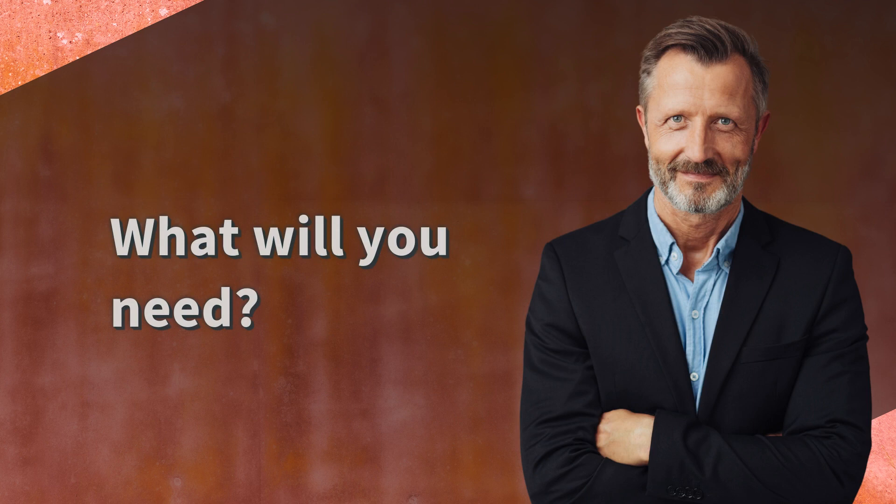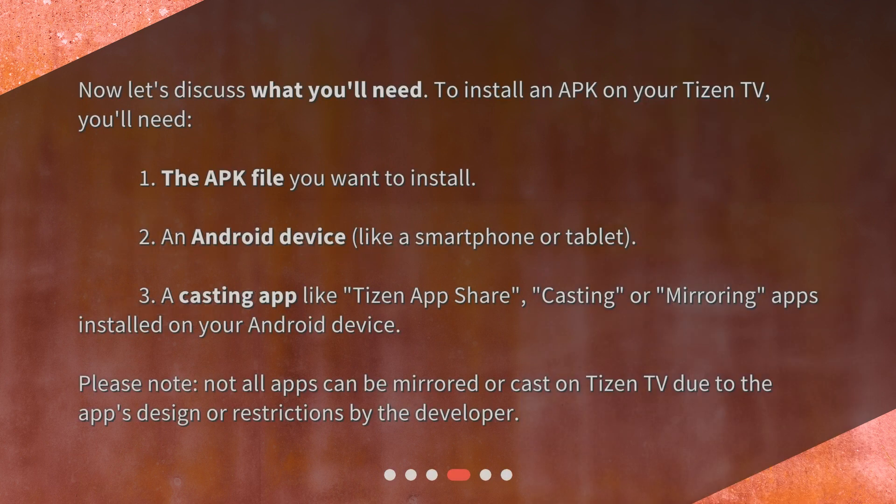What will you need? To install an APK on your Tizen TV, you'll need: 1. The APK file you want to install. 2. An Android device, like a smartphone or tablet. 3. A casting app like Tizen App Share, Casting, or Mirroring apps installed on your Android device. Please note, not all apps can be mirrored or cast on Tizen TV due to the app's design or restrictions by the developer.